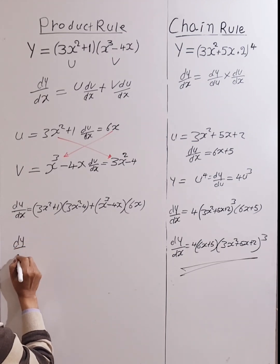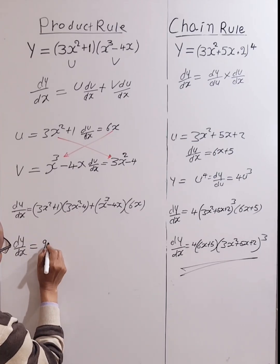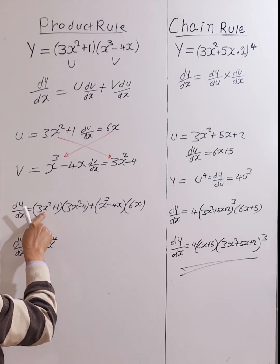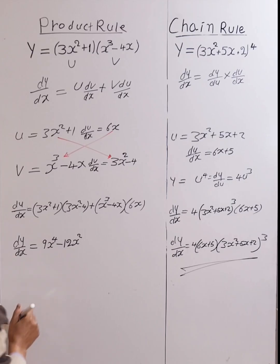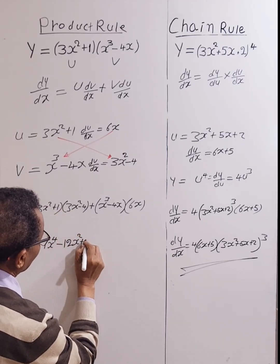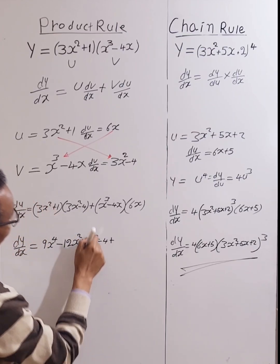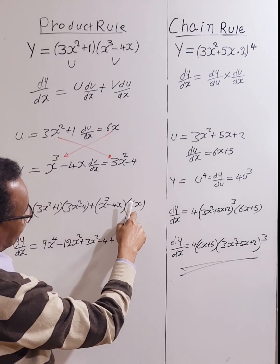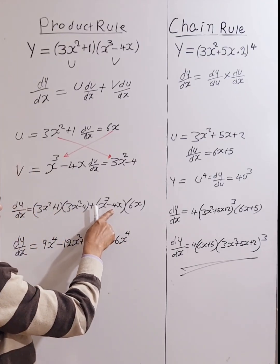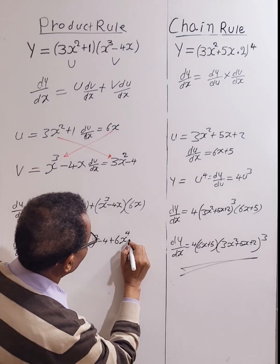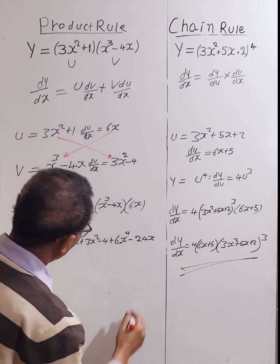So dy/dx equals (3x²)(3x²) which is 9x⁴, and (3x²)(−4) which is −12x², plus (1)(3x²) which is 3x², and (1)(−4) which is −4, plus (x³)(6x) which is 6x⁴, and (−4x)(6x) which is −24x².